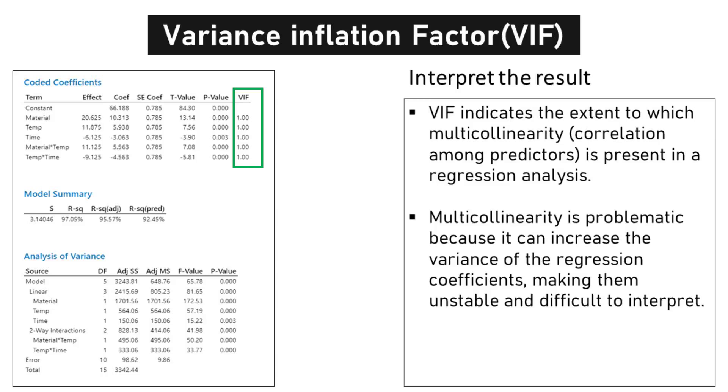Multicollinearity is a crucial factor to consider when conducting regression analysis. It is measured using the variance inflation factor, VIF, and high VIF values indicate strong correlations among predictors. This can result in unstable and unreliable regression coefficients, making it difficult to interpret the impact of individual predictors on the outcome variable.